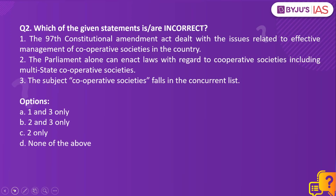Question 2: Which of the given statements is or are incorrect? Statement 1: The 97th Constitutional Amendment Act dealt with the issues related to effective management of cooperative societies in the country. Statement 2: The Parliament alone can enact laws with regard to cooperative societies including multi-state cooperative societies. Statement 3: The subject cooperative societies falls in the concurrent list.